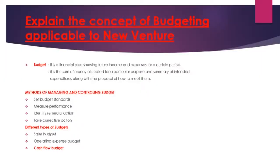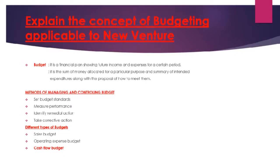Another definition: a budget is a sum of money allocated for a particular purpose, with a summary of the intended expenditures. It means when you are expecting money — for example, $1,500 — you need to plan ahead what you are going to use that $1,500 for. That is what we call a budget. From there, we have different methods of managing or controlling that budget.